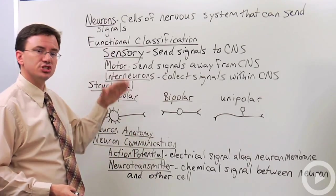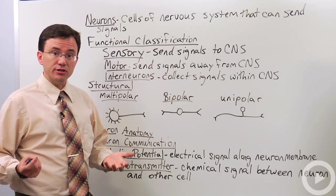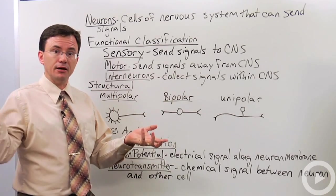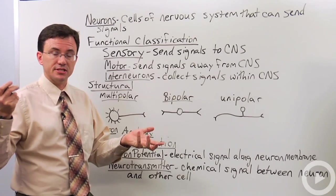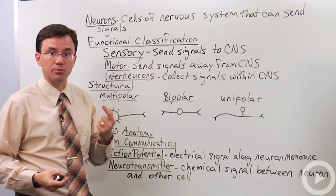Now, there's a couple ways that you can classify them. One is by function. What do they do? Sensory neurons are the ones that are picking up information from the senses and sending signals to the central nervous system, i.e. sending it up to the brain or spinal cord.